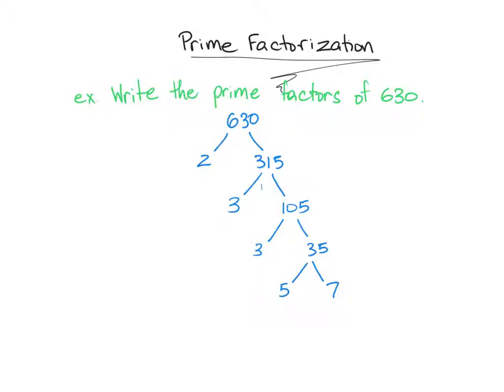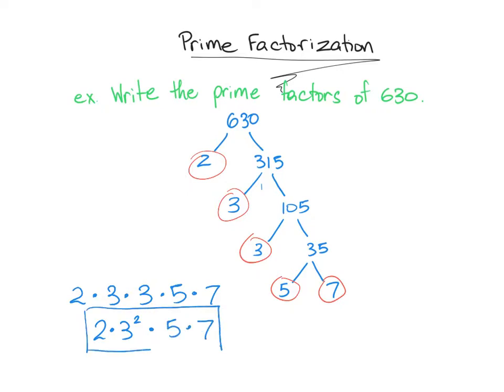And so you can get 630 if we take this, this, this, this, and this, and multiply them by each other. So let's circle them so we remember where these numbers are coming from. So the prime factorization of 630 is 2 times 3 times 3 times 5 times 7. And since we're multiplying 3 by itself, we can replace that with 3 squared. So 2 times 3 squared times 5 times 7. And that's how we do prime factorization.